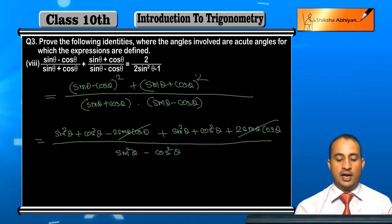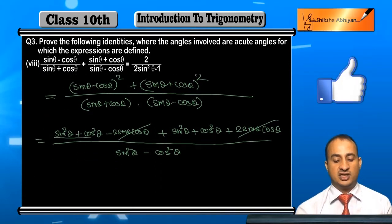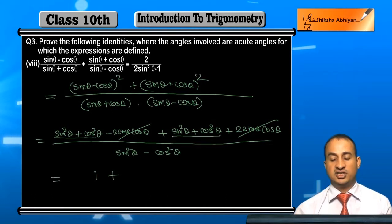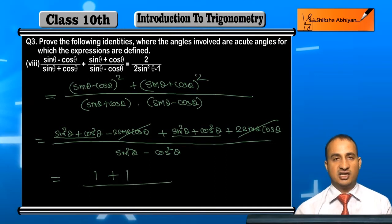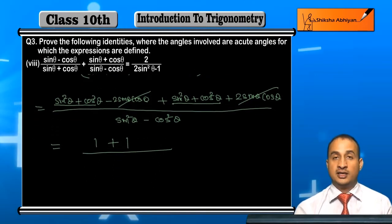And on the upper side, what do you get? Sine square theta plus cos square theta, which is 1, plus sine square theta plus cos square theta, again 1. Now on the lower side, student, see what you need there.